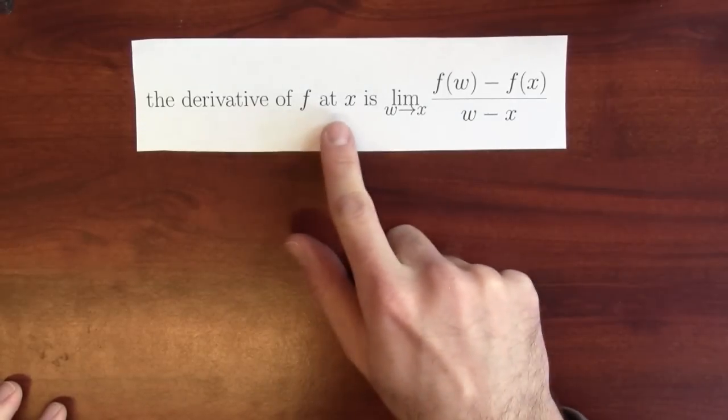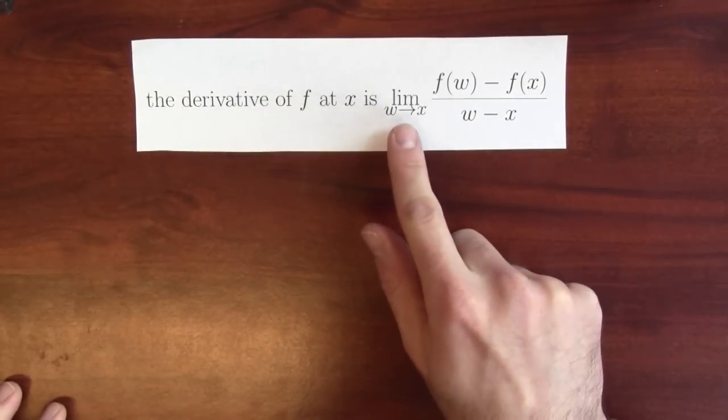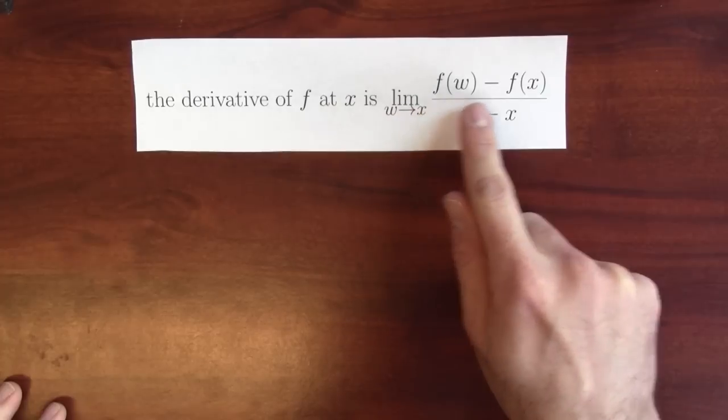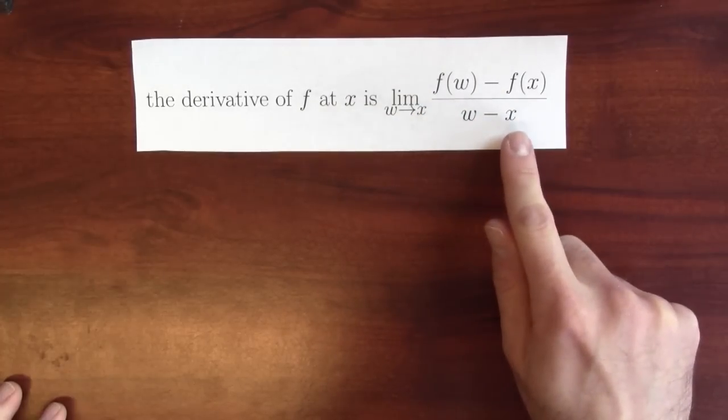Sometimes you'll see different definitions of the derivative. Here's an equivalent one. The derivative of f at x could equivalently be defined as this limit: the limit as w approaches x of f(w) minus f(x) all over w minus x.